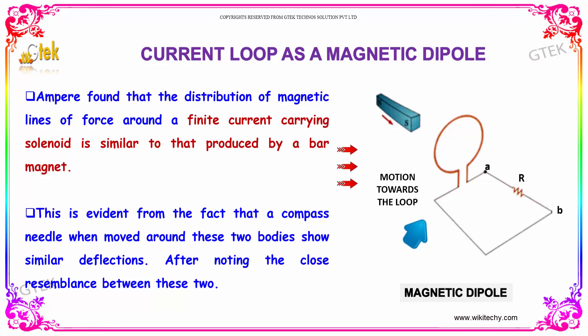Let's talk about the current loop as a magnetic dipole. Ampere found that the distribution of magnetic lines of force around a finite current-carrying solenoid is similar to that produced by a bar magnet.